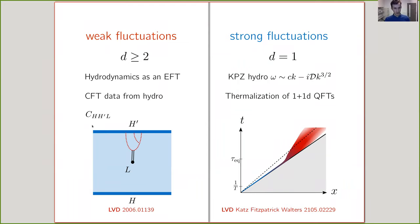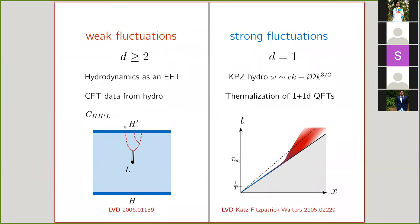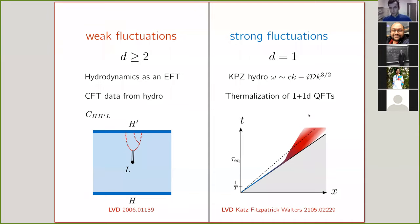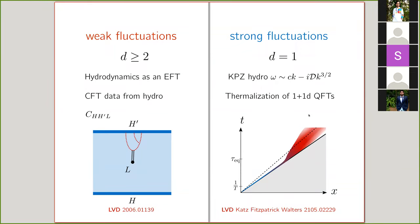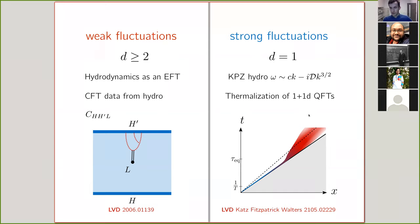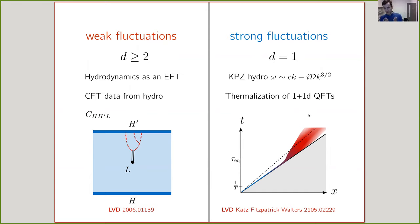For example, OPE coefficients involving heavy operators can be extracted in terms of this hydrodynamic effective field theory. On the strong fluctuations side, I'll talk about 1+1 dimensional quantum field theories where this occurs, and we'll see that there are a lot of special things happening in 1+1 dimensions. This will be based on a recent paper.